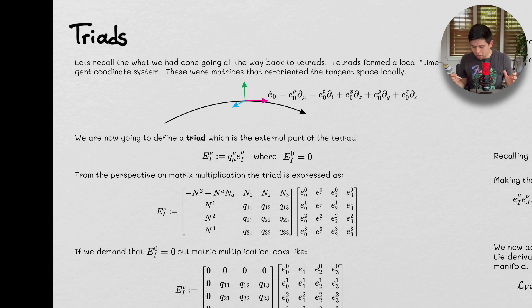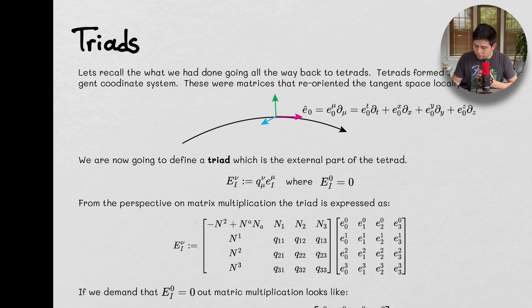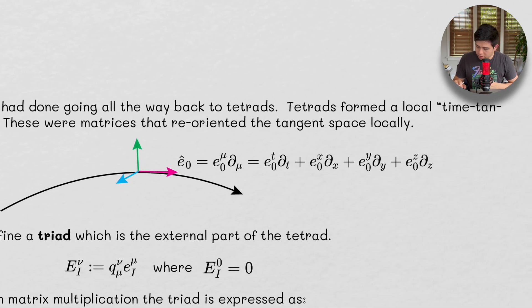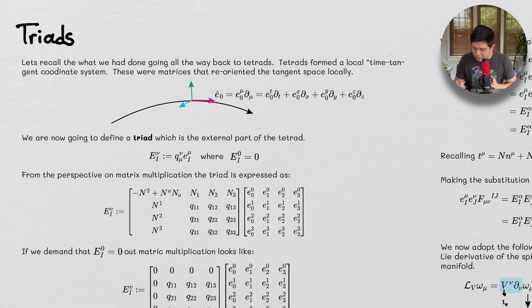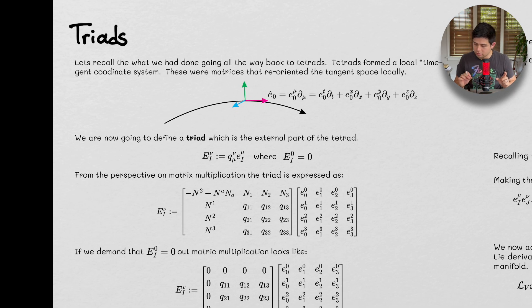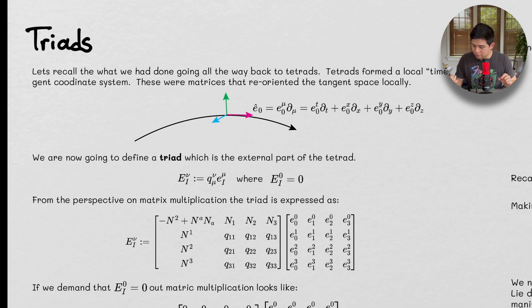So triads are going to be sort of the spatial part of tetrads. And let's go ahead and start looking at this. So recall that what we had done going all the way back to tetrads. Tetrads formed a local time-tangent coordinate system where these matrices reoriented the tangent space locally.